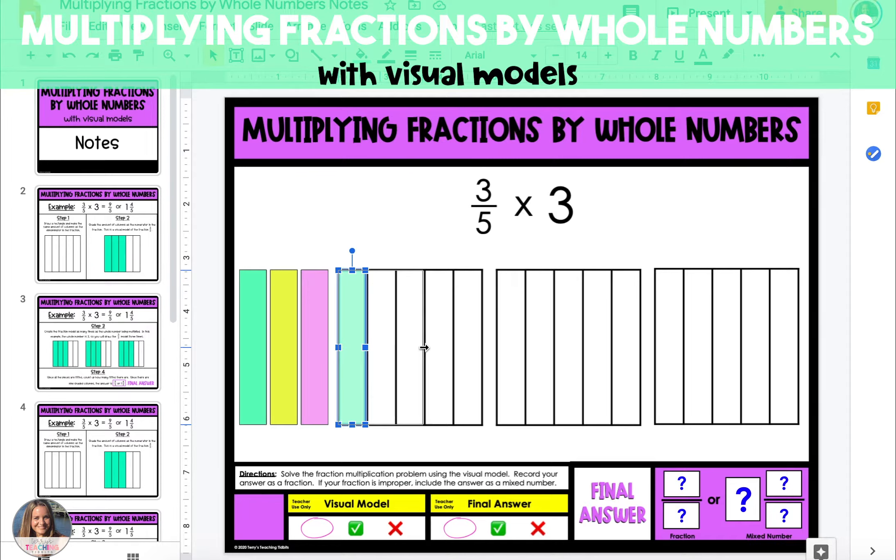Once you've shaded 3 fifths of the first model, grab another color and shade in the remaining fifths of that model. Because that's two fifths, we need to fill in one fifth of the second model. Now we have three fifths two times.